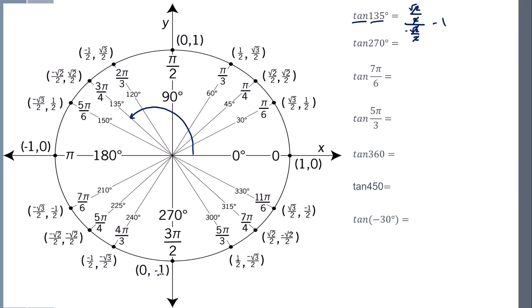Tangent of 270, so y over x. So negative 1 over 0, you can't divide by 0, so it's going to be undefined.